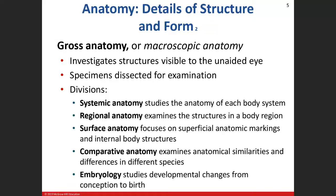There are a couple different divisions to gross anatomy. Systemic has to do with each body system. In the first half of this course, we're going to lay down a lot of the basics, and then in the second half we'll get into body systems: the nervous system, the muscular system, the skeletal system. In 2.11, you'll pretty much spend that whole semester dealing with systemic anatomy — cardiovascular, endocrine, digestive, immune, circulatory system.